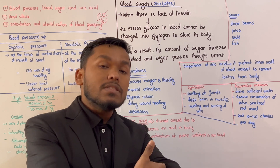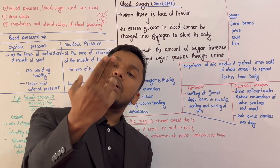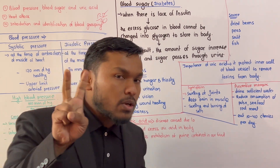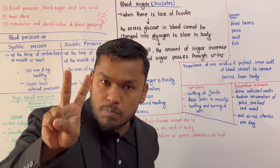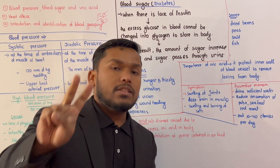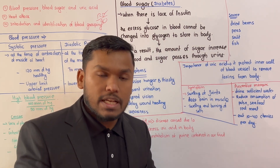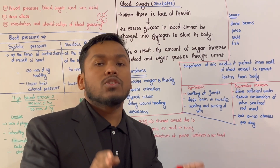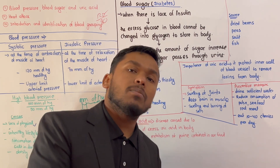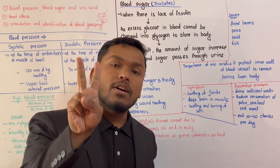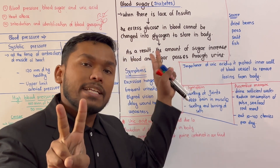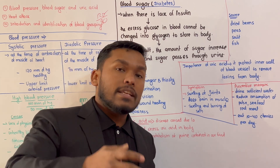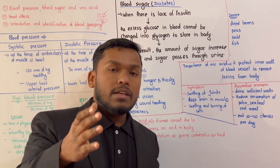If you have a blood sample, you can use it to check glucose levels. When glucose levels are very low in the blood, this is due to lack of insulin. We are then in the early stages of diabetes.